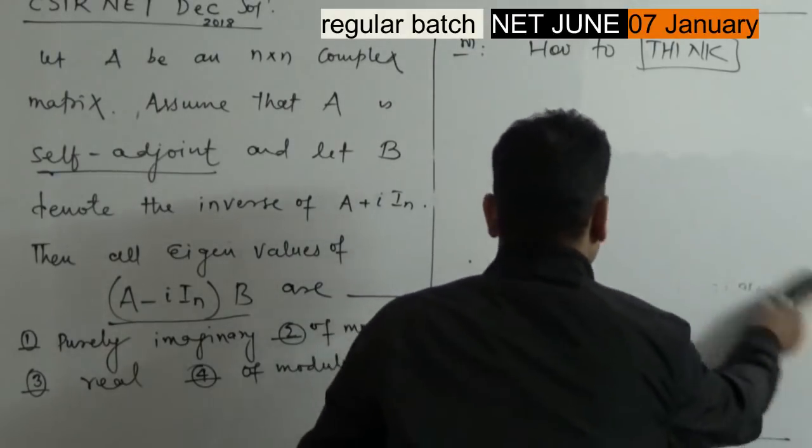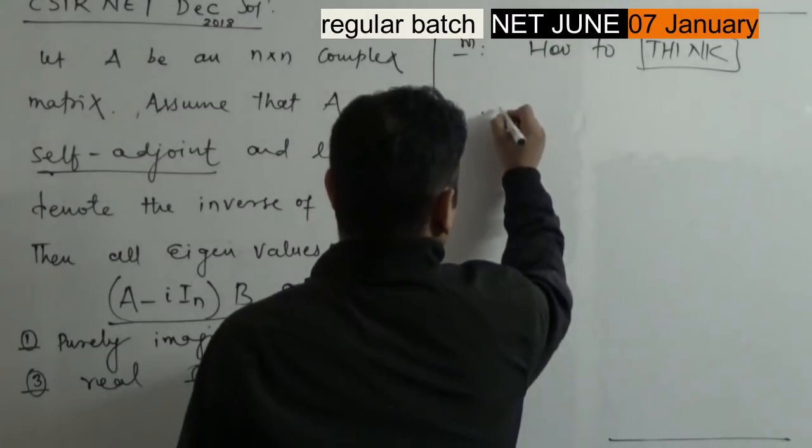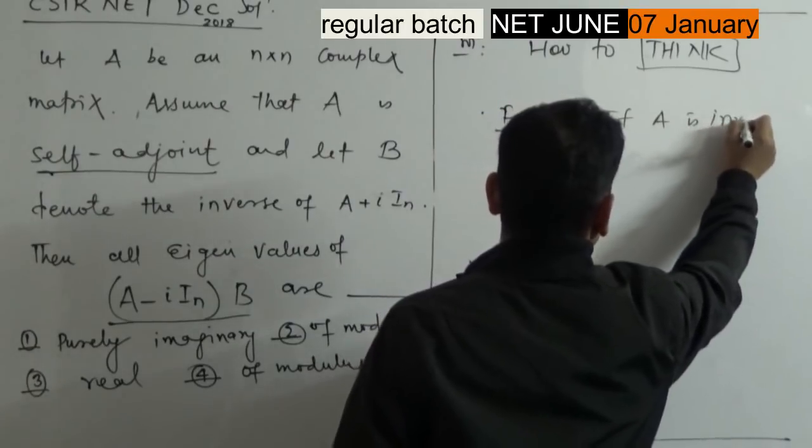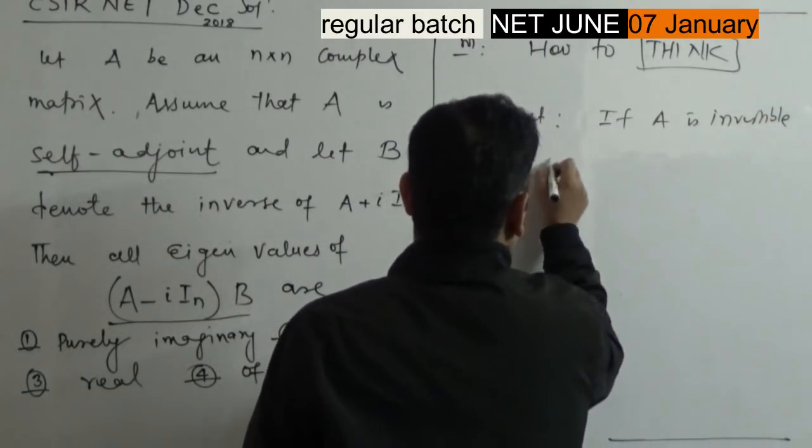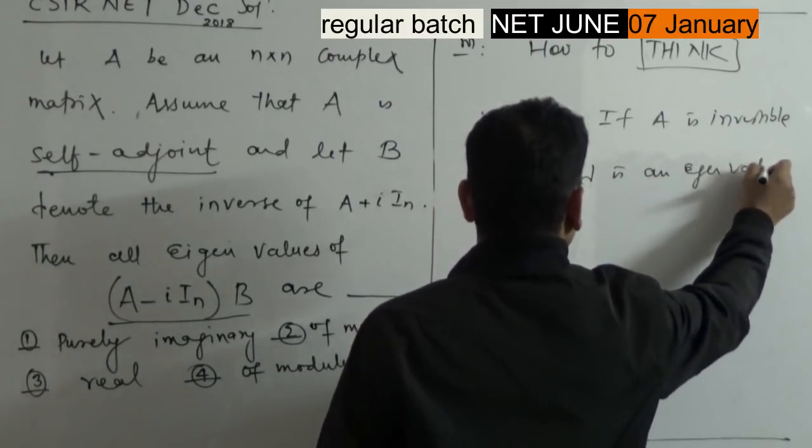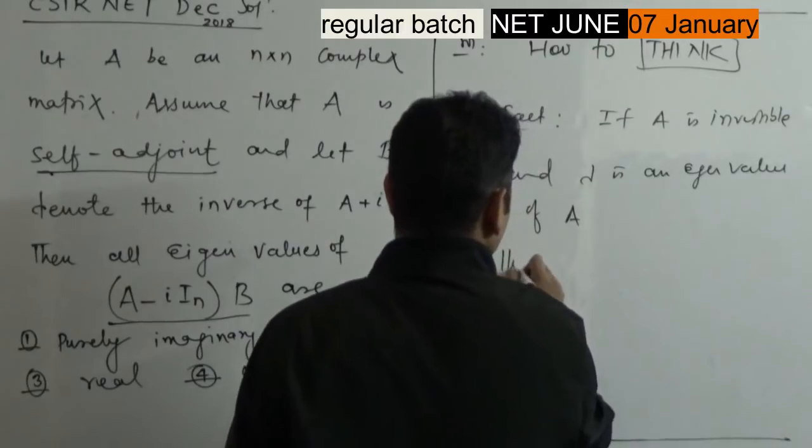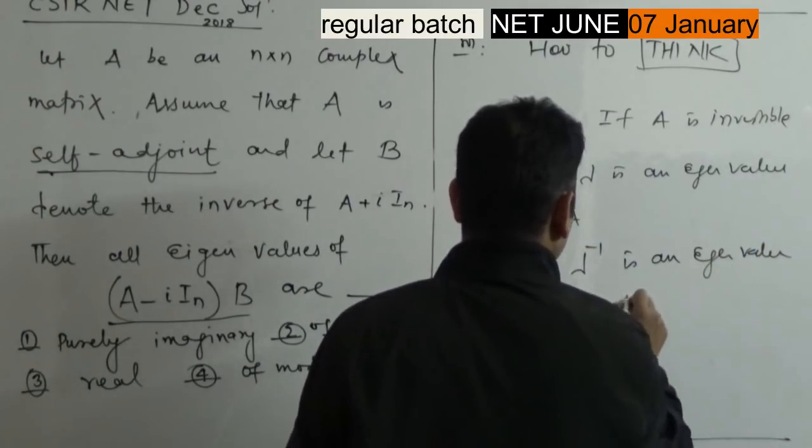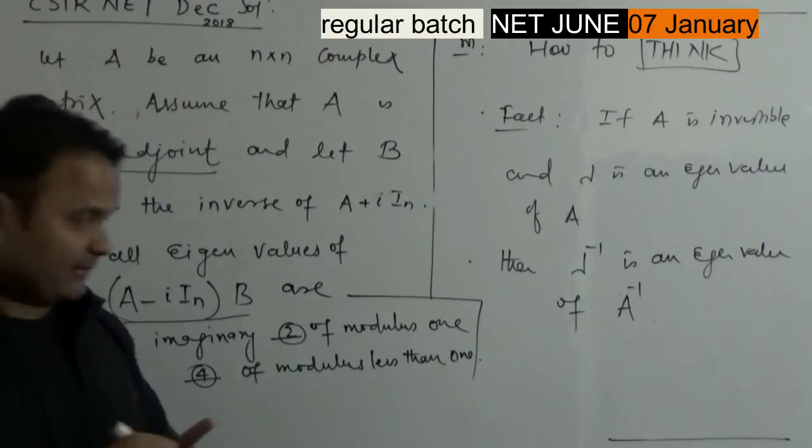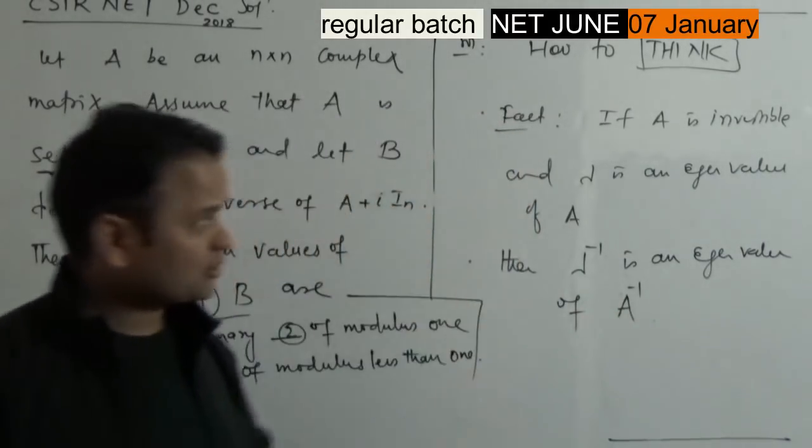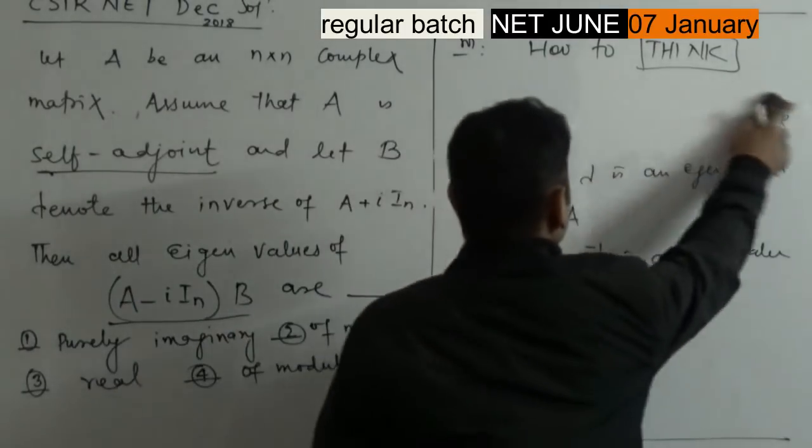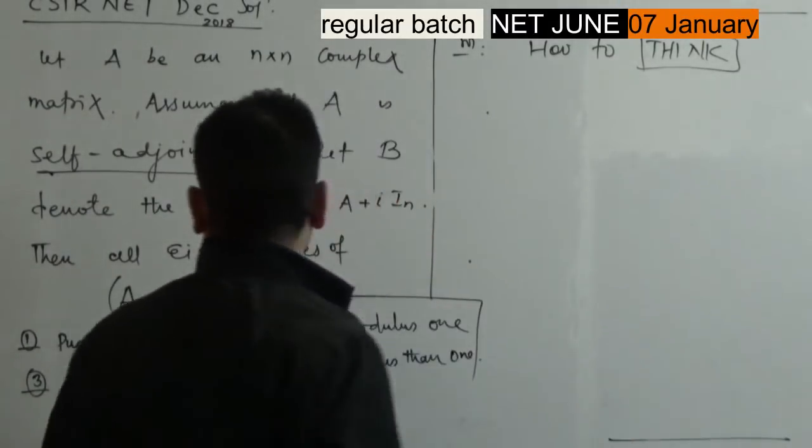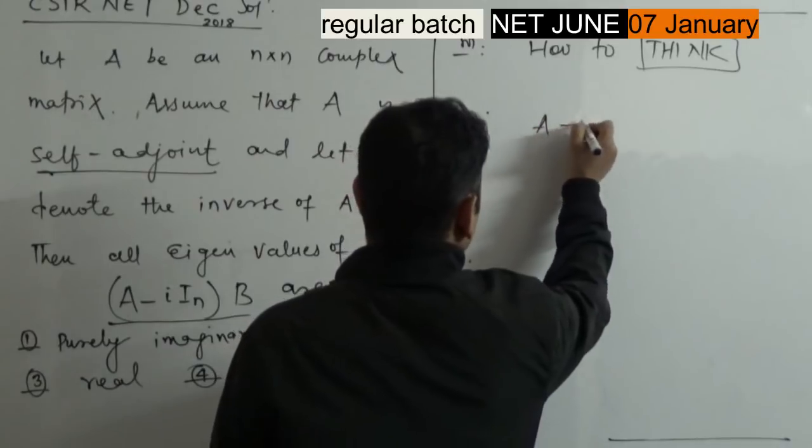According to the fact you have given, this matrix is invertible. Recall: if A is invertible and lambda is an eigenvalue of A, then lambda inverse is an eigenvalue of A inverse. Now I will use this thing to answer this question. I will use this thing effectively.